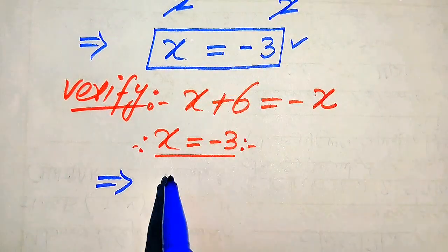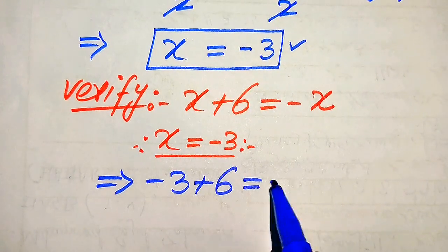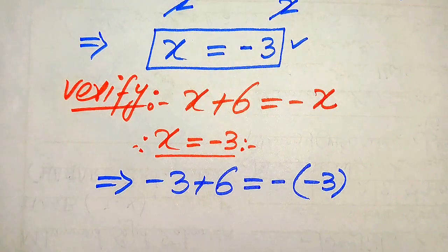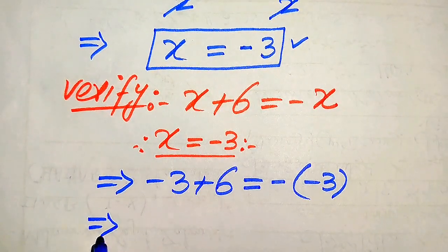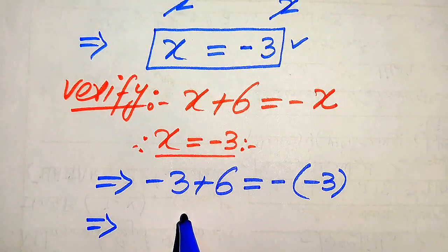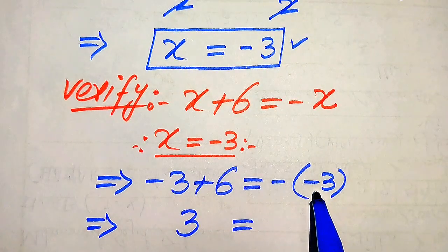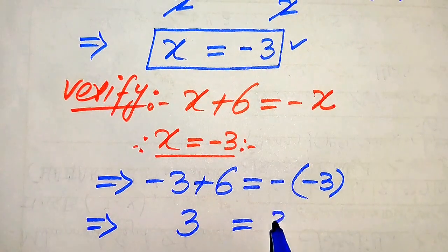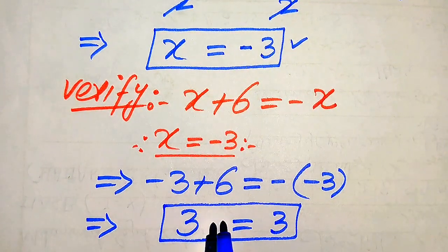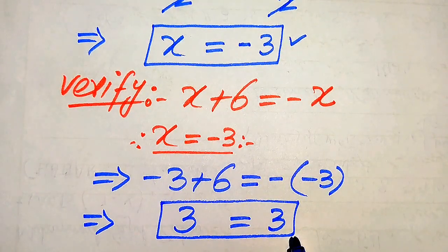When we substitute x equals minus 3, it becomes minus 3 plus 6 equals minus times minus 3. We get minus 3 plus 6 equals plus 3, and since minus times minus becomes plus, the right side also equals plus 3. This confirms that x equals minus 3 satisfies our original equation.